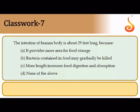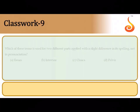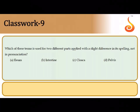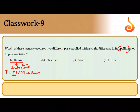The intestine is 29 feet long to maximize surface area for digestion and absorption. Crypts of Lieberkühn are depressions between villi in the inner wall of the small intestine that secrete intestinal juice called succus entericus. The term used for two different body parts with a slight spelling difference is ileum: i-l-e-u-m is the third part of the small intestine, while i-l-i-u-m is the bone of the hip region — the coxal bone.